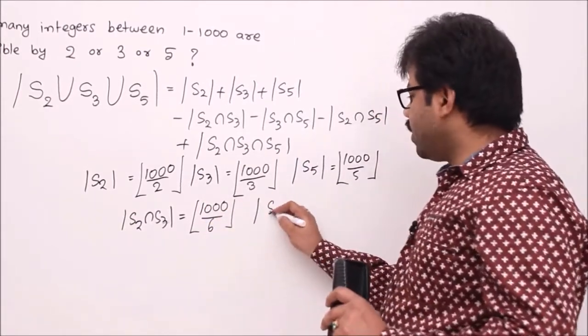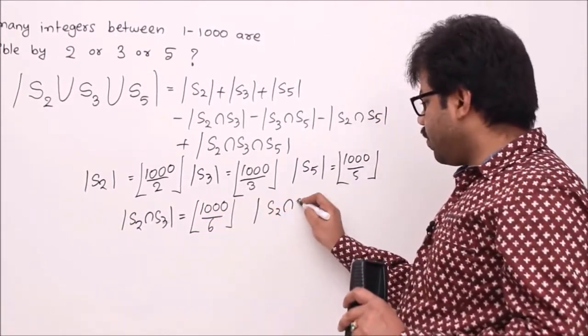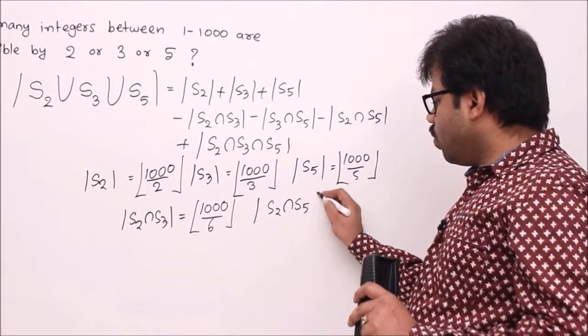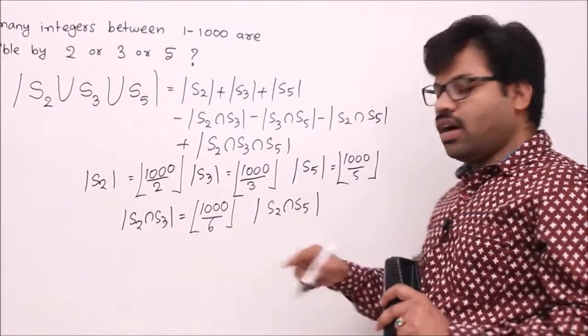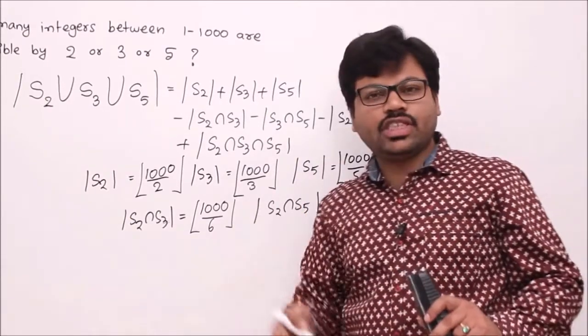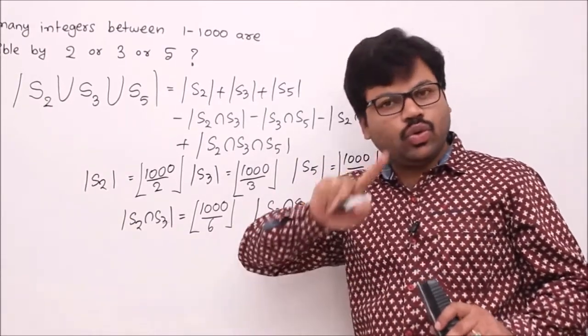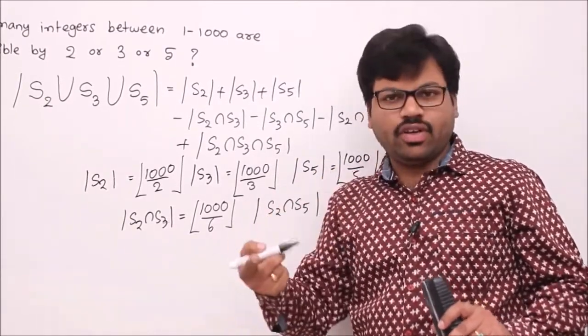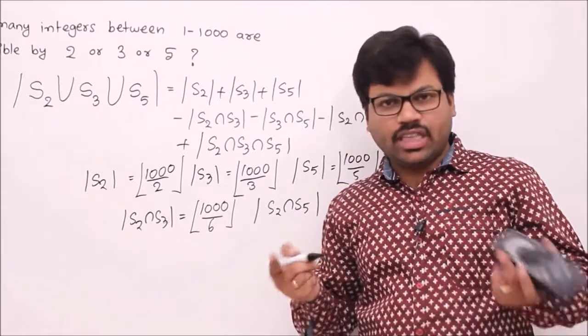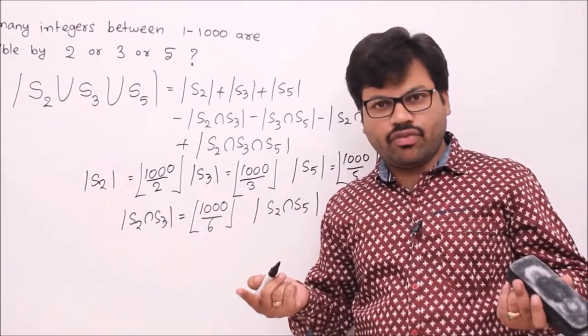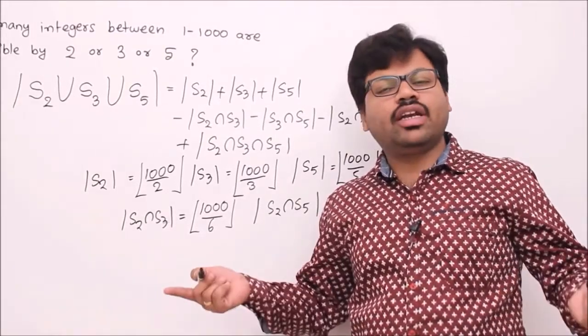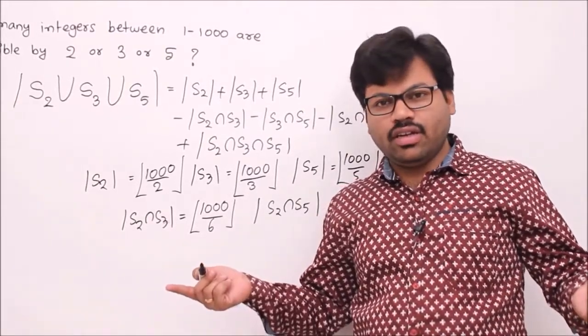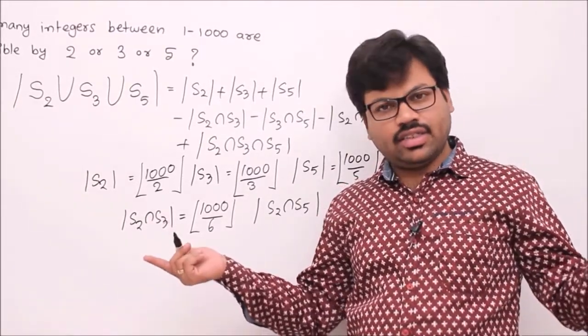Now substituting into the formula: |S2 ∪ S3 ∪ S5| = 500 + 333 + 200 − 166 − 66 − 100 + 33. Simplifying gives 734. So there are 734 integers between 1 and 1000 divisible by 2, 3, or 5.